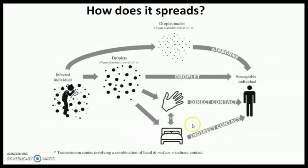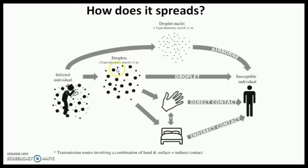How does this virus spread? We already know that the virus spreads through droplets. Droplets are very small water-like particles that come out when we sneeze or cough. When the size of these particles is less than 5 micrometers, these particles actually carry virus particles.